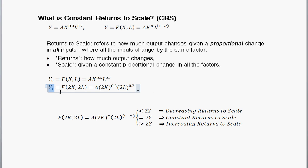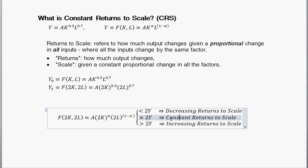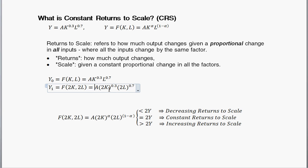How does that new level of output relate to the initial level of output? I've doubled capital and labor — does that mean I've doubled output? Or by doubling capital and labor, does that mean I've more than doubled initial output? Or is that less than doubling initial output? Down here I give hints as to the definitions of each, and we're going to focus on constant. So let's show that this is constant returns to scale.